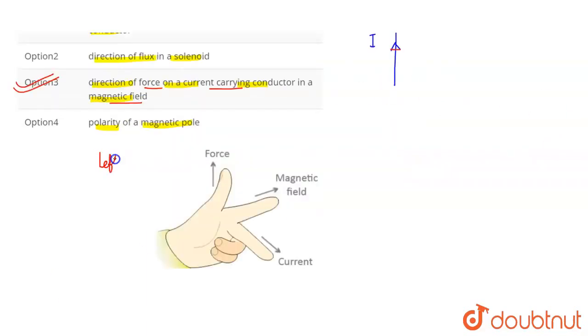First of all, the important thing is that we have left hand. Left hand, the middle finger is current, the forefinger is magnetic field.